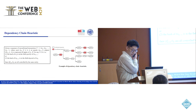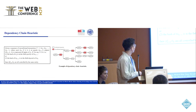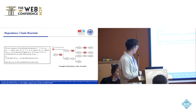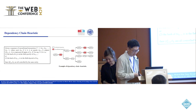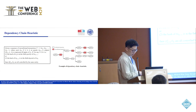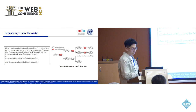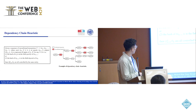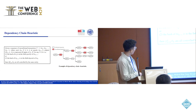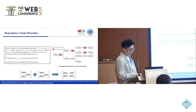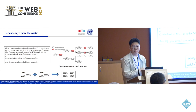The second heuristic, dependency chain, involves analyzing a sequence of unconfirmed transactions where each transaction spends the output of the previous one. If the hash of a transaction appears in the spends-by or dependence fields of another, they are likely controlled by the same entity. In this picture, there are two dependency chains: one consisting of TX1, TX2, and TX4, and another consisting of TX1, TX2, and TX5. Therefore, addresses 0, 1, and 3 belong to the same user, and addresses 0, 1, and 4 belong to the same user. After merging, all four addresses belong to the same user.